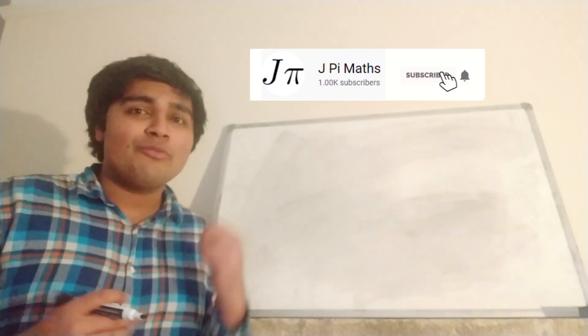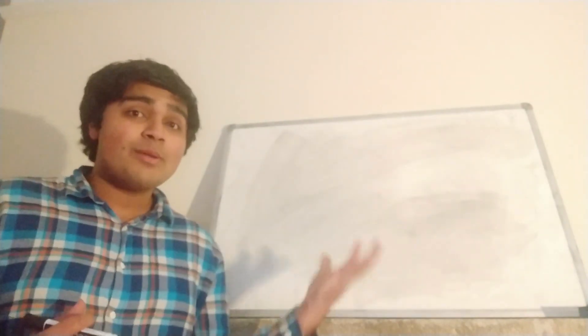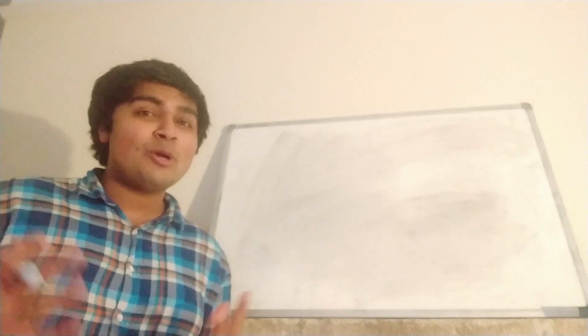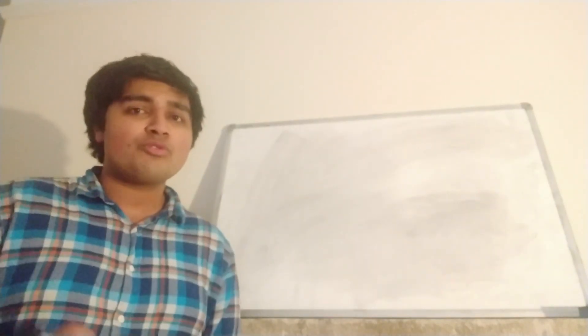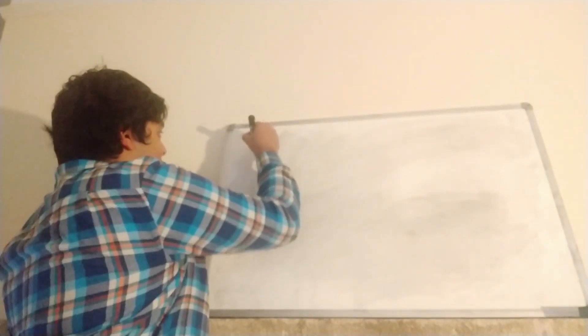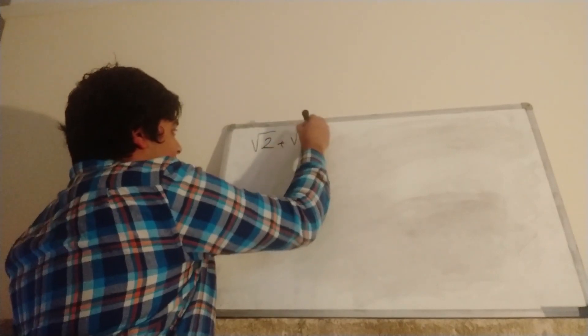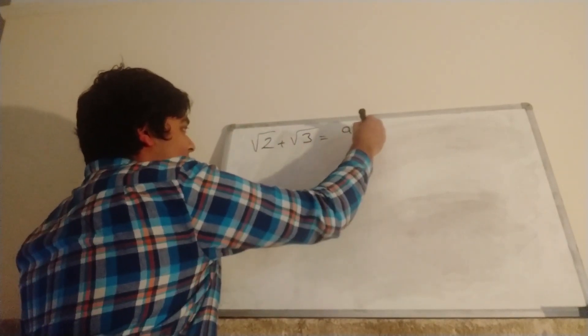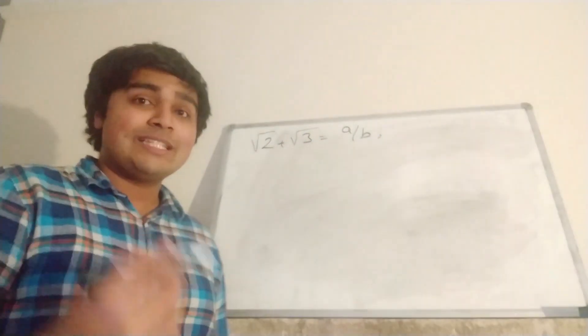So like with most proofs of the irrationality of √2, it's going to be a proof by contradiction. So we're going to suppose for contradiction, √2 + √3 is rational, so then we can write √2 + √3 = A/B, where A and B are positive integers.